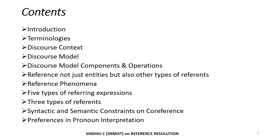The contents in this lecture will be a simple introduction on identifying what is reference and what is resolution. Then we look at terminologies like what is a referent, what is a referring expression. Then we look at what is a discourse context, discourse model, its components and two important operations. Then we see that discourse is not just reference entities but also other types of reference, and we look at what are the reference phenomena. We basically have five types of referring expressions and three types of reference. Finally, we look at the syntactic and semantic constraints on coreferences and a few preferences in pronoun interpretation. Apart from this, we will also look at a list of algorithms used for resolving these reference problems.